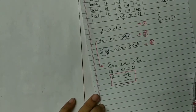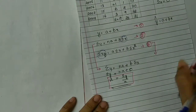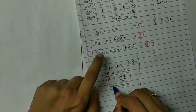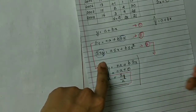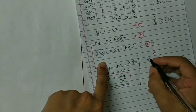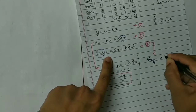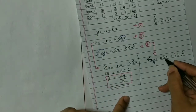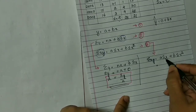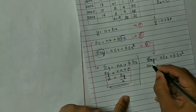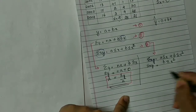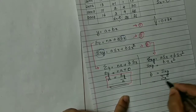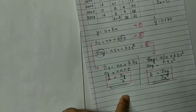Same way, to calculate the value of b, we use equation 3: summation xy equals a summation x plus b summation x squared. Since summation x is 0, the a term becomes 0, leaving summation xy equals b summation x squared. So the formula simplifies to b equals summation xy divided by summation x squared.